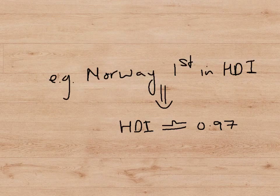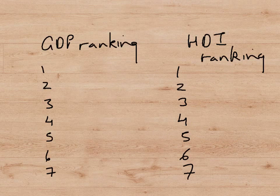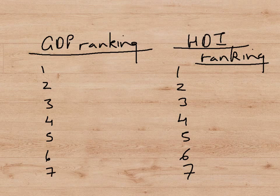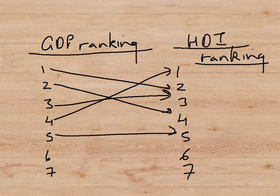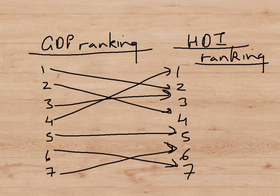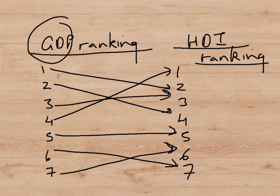For example, Norway is currently first in the HDI league and has an HDI measure of approximately 0.97. When we compare countries as they appear in GDP rankings — highest to lowest — and HDI rankings, we do see a very strong correlation between countries measured in each way. Countries that are very high up in the GDP rankings tend to also be quite high up in the HDI rankings, which tells us that GDP, despite all its faults, is not such a bad measure of welfare.